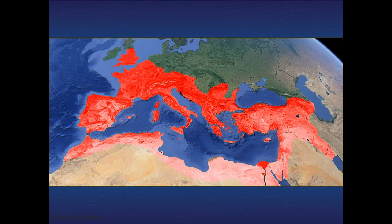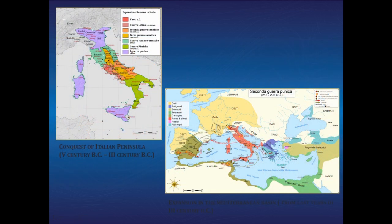At the height of its expansion, the Roman Empire reaches across three continents: Europe, North Africa and Asia Minor. The expansion of the Roman Empire was a long process, began during the fifth century before Christ. In the first phase, ended in the second half of the third century before Christ with the first Punic War, the Romans extended their control to the entire Italian peninsula. It is with the defeat of Carthage in the second Punic War, at the end of the third century before Christ, that Rome moves to a predominant role within the Mediterranean basin.